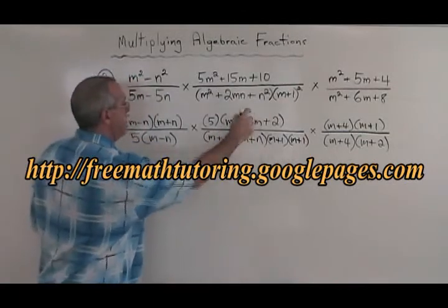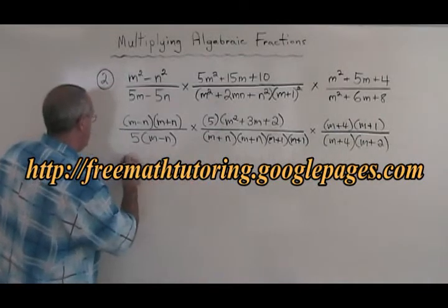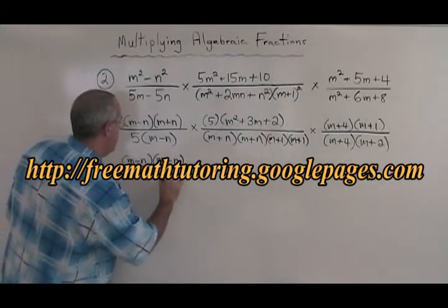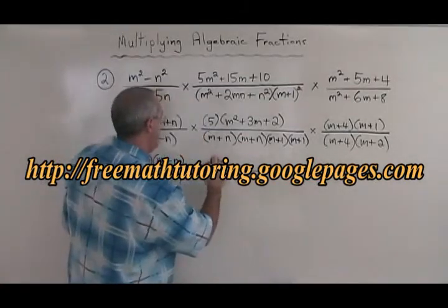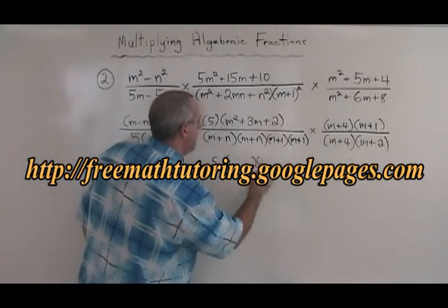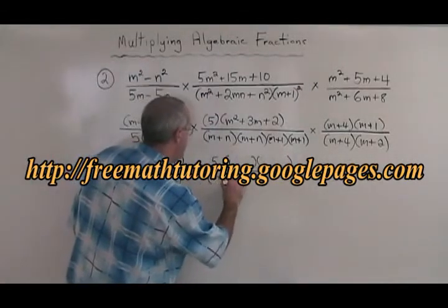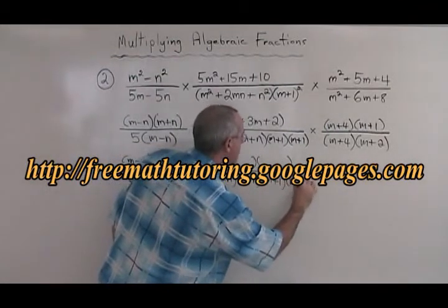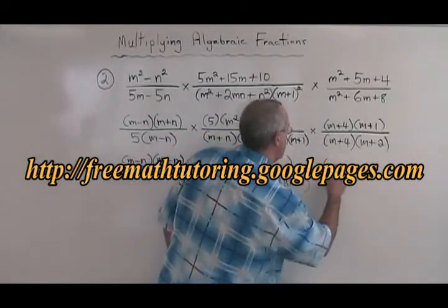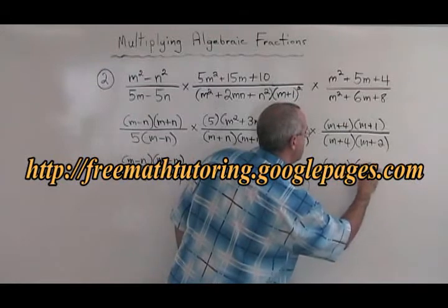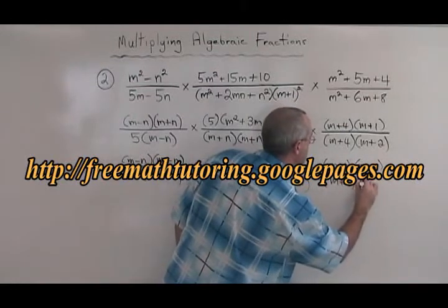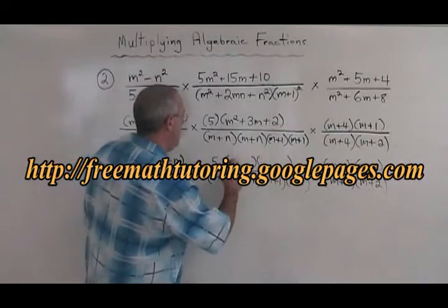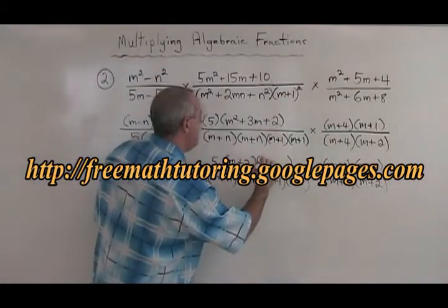Now we have to factor the last trinomial, which means a lot of copying. Writing everything out: (m minus n)(m plus n) over 5(m minus n), times 5 over (m plus n)(m plus n)(m plus 1)(m plus 1), times (m plus 4)(m plus 1) over (m plus 4)(m plus 2). For that last trinomial — what two numbers multiply to give 2 and add to give 3? They are 2 and 1, giving (m plus 2)(m plus 1).